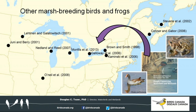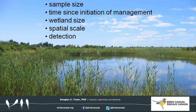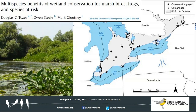What we hear much less about is how NAWMP wetland management techniques benefit other marsh breeding birds and frogs. There have been a handful of studies scattered throughout northeastern North America on this topic. These studies show that some marsh birds and frogs are positively influenced by NAWMP management, but each had limitations — small sample sizes, short time since initiation, small wetland sizes, limited spatial scales, and none adjusted for detection probability. None looked specifically at the benefits of controlling invasive Phragmites before and after control.